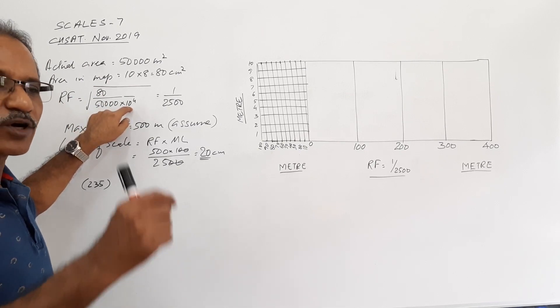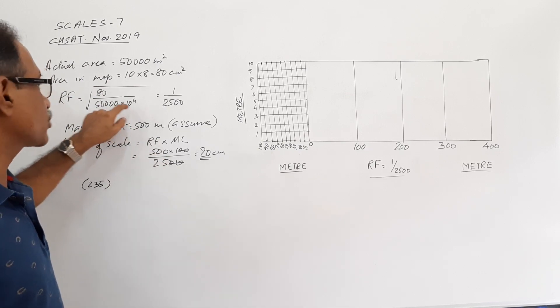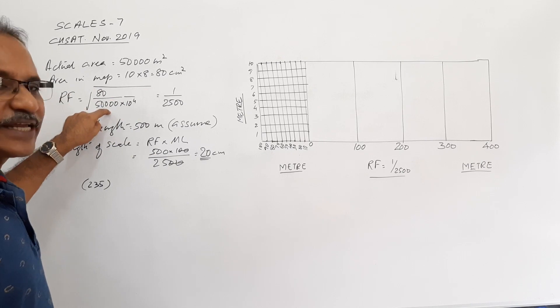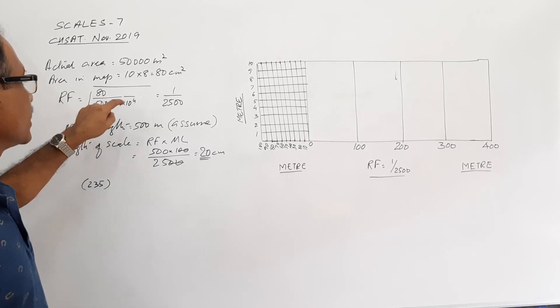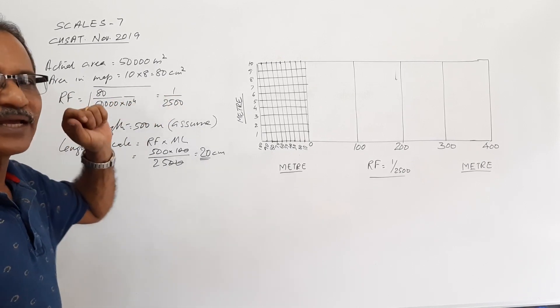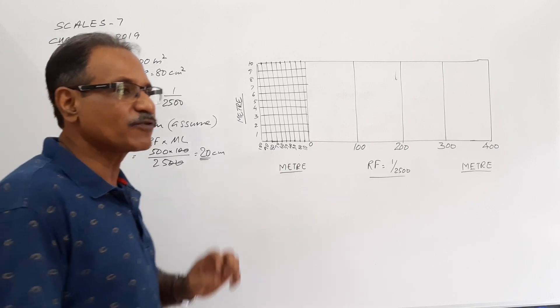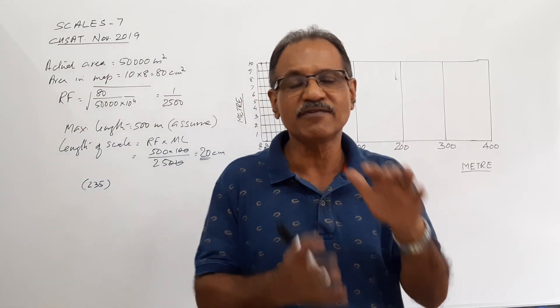We use 10 to the power of 4 because we want to convert it into centimeter square — 80 cm square. This will give you an RF of 1 by 2500. So the RF of the scale is determined first from the given area and the original area: RF is 1 by 2500.